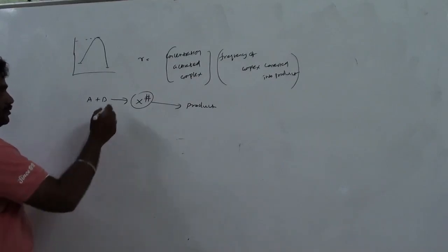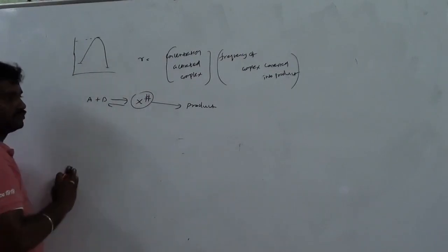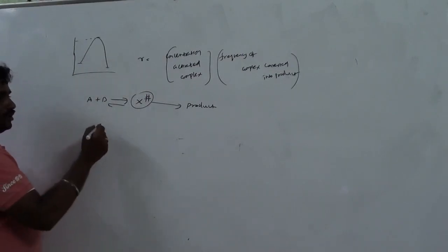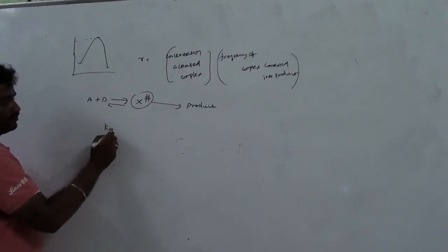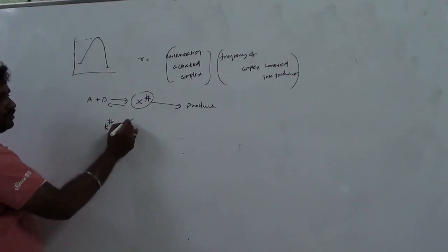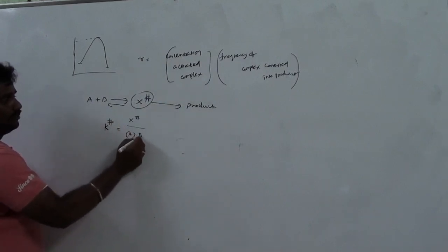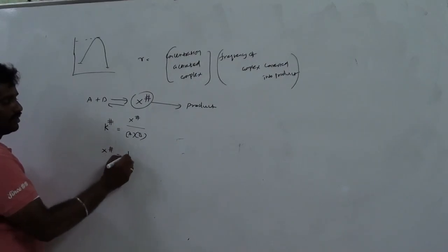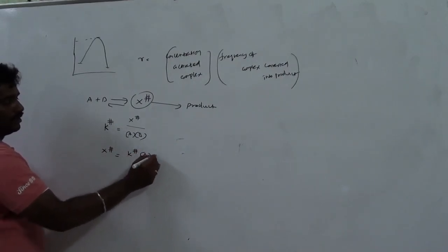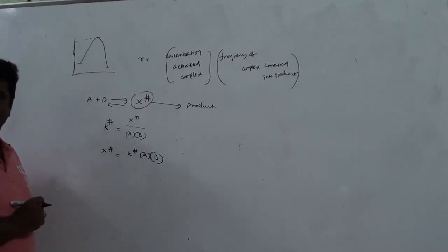The first step should be reversible — formation of the transition state, which may reverse back into reactants. We define K‡ as the equilibrium constant. K‡ equals [X‡] divided by [A][B], so the concentration of the activated complex X‡ equals K‡ times [A][B]. Now we have the concentration of the activated complex.